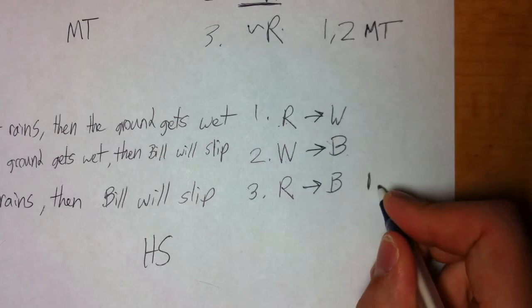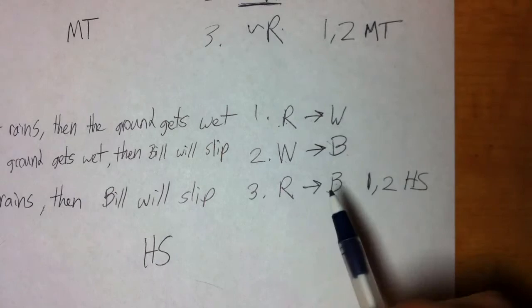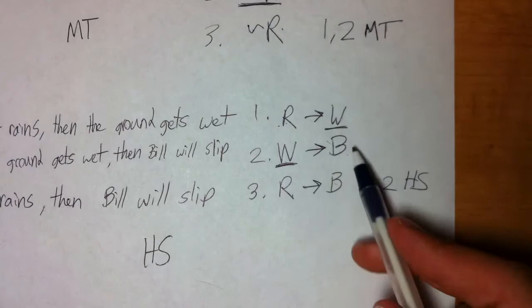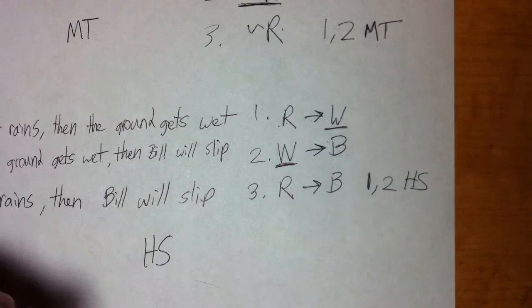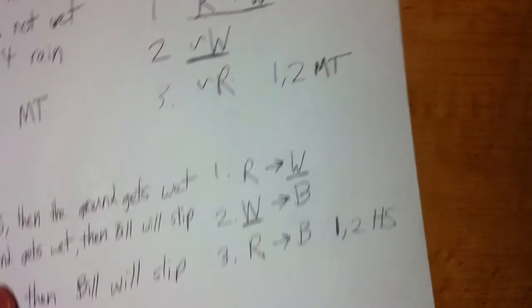HS is always a two-line rule. If number one was the first conditional and number two was the second conditional, we write HS. That's how we use hypothetical syllogism — we're looking for the pattern where the consequent of one conditional is the antecedent of another. It doesn't come up too often, but when it does you really need to be paying attention for it. Modus ponens and modus tollens will come up all the time.